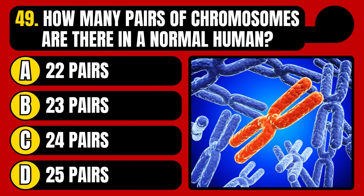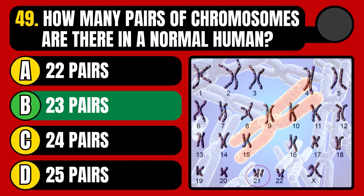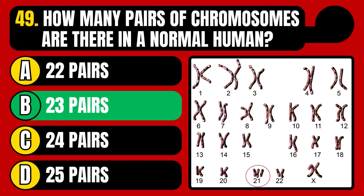How many pairs of chromosomes are there in a normal human? 22 pairs, 23 pairs, 24 pairs, or 25 pairs? The correct answer is option B, 23 pairs.